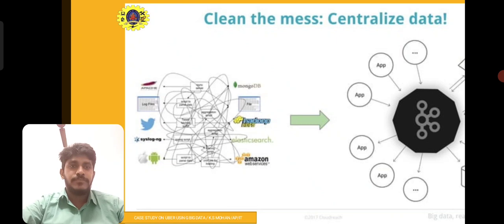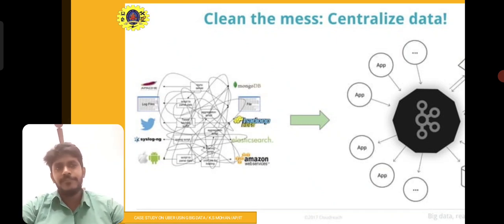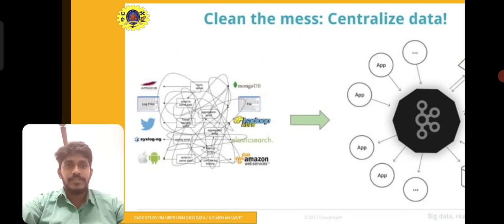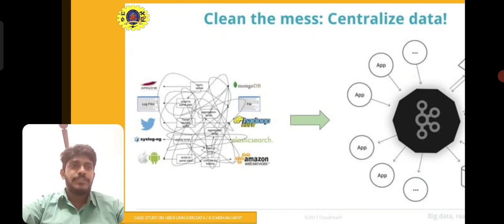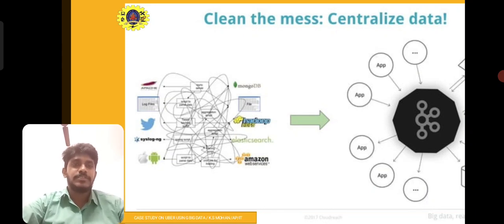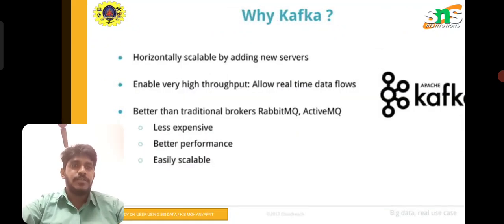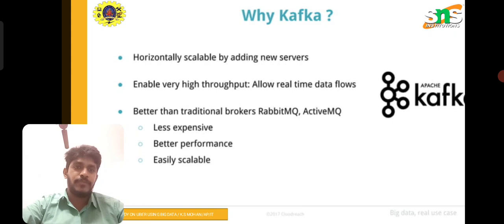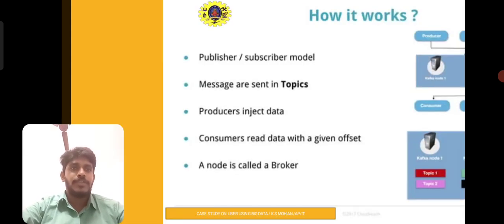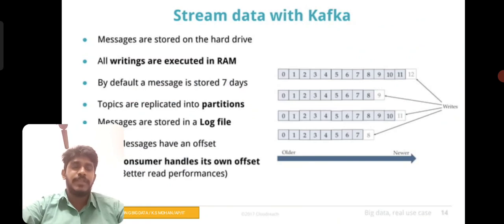For centralizing data and cleaning the mess, we discussed Hadoop, Amazon, MongoDB, and many other tools available for handling big data analytics. In the picture, you can see how centralized data can be used to clean unwanted messages and bugs. Kafka is horizontally scalable by adding new servers — it is better than traditional brokers like RabbitMQ and ActiveMQ. It is less expensive, offers better performance, and is easily scalable.